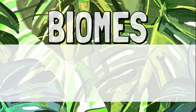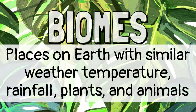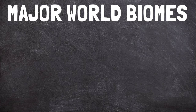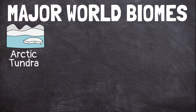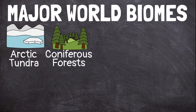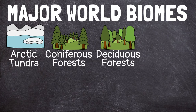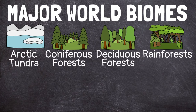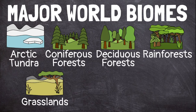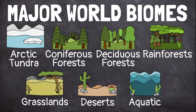Biomes are places on Earth with similar weather, temperature, rainfall, plants, and animals. Some of Earth's major biomes include Arctic tundra, coniferous forests, deciduous forests, rainforests, grasslands, deserts, and aquatic biomes.